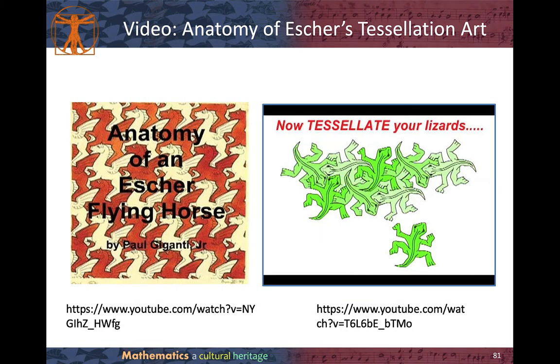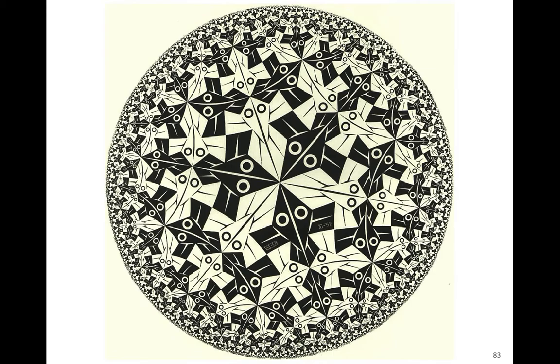Please pause this video and spend some time watching the anatomy of Escher's tessellation art — you can find the link in Moodle. This one is on the anatomy of Escher's flying horse, and this one is on the anatomy of Escher's lizard. In his later series, instead of having the whole picture with the same shapes, we can see a gradual change from one side of the painting to another. This relates to non-Euclidean geometry — we call this the Poincaré disk. All the black and white shapes here are congruent.